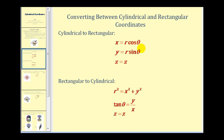Using some trigonometry we can come up with equations that relate cylindrical and rectangular coordinates. We have x equals R cosine theta, y equals R sine theta, and Z is equal to Z. We also have R squared equals X squared plus Y squared, tangent theta equals Y over X, and again Z equals Z. So let's take a look at doing some of these conversions.